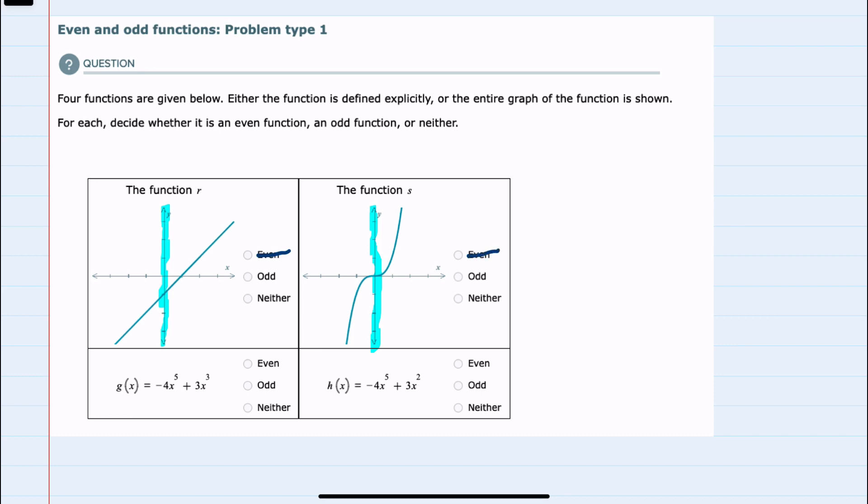If we move on to odd symmetry, that would mean that every point on the line is mirrored across the origin. So for example, if there were a point on this line, it would have its mirror across the origin. We can see that on this left-hand function, we also do not have odd symmetry. So this actually has neither.